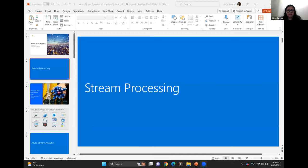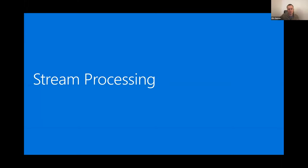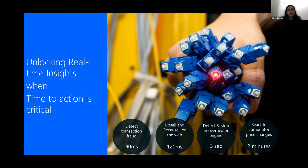So what is real-time processing? It's about unlocking real-time insights when time to action is critical. For example, if you're doing a credit card transaction and want to detect fraud, you need to understand within milliseconds. Or there's an upsell or cross-sell on the web — you want to understand in real-time. Or maybe there's an overheated engine or fridge, and you want processing, metrics, and alerting in real-time within seconds or minutes.